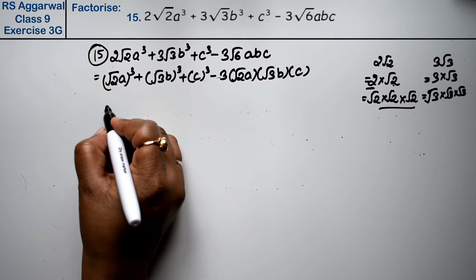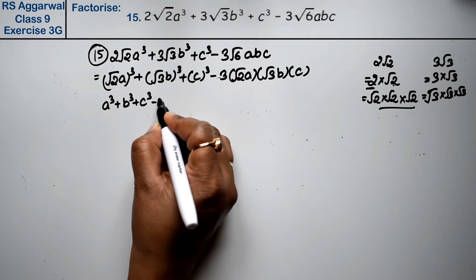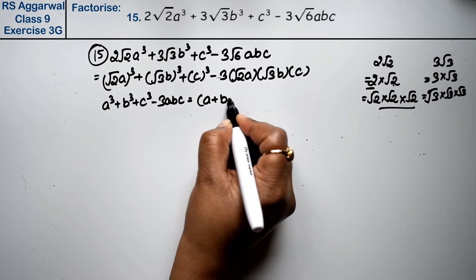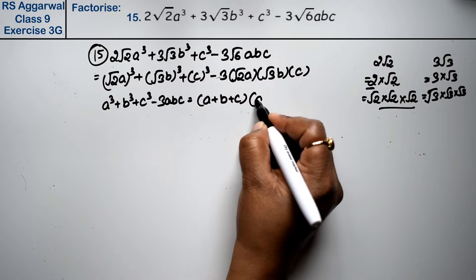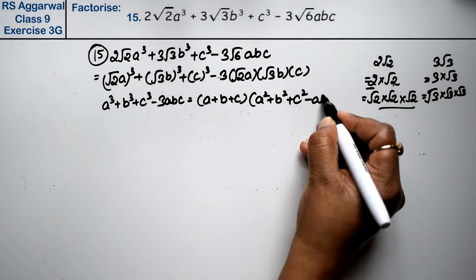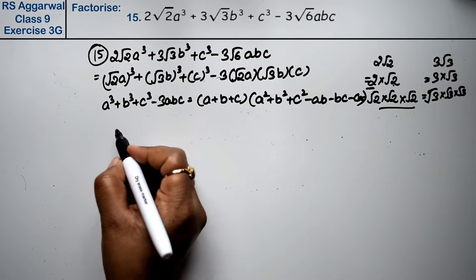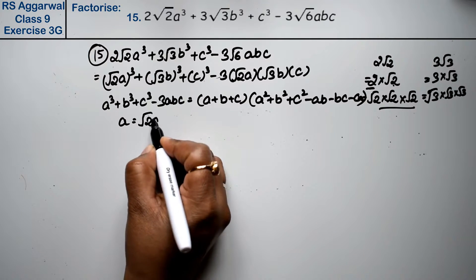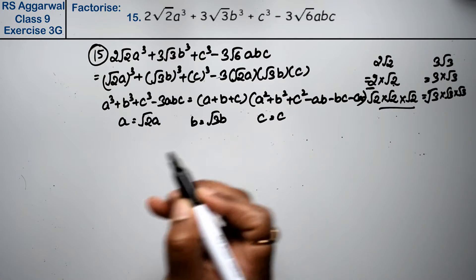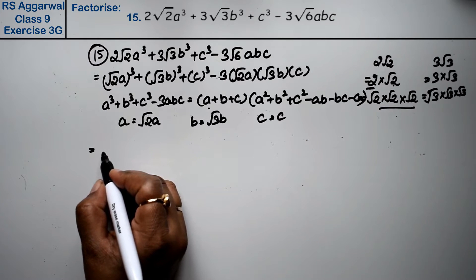Now, the formula for a³ + b³ + c³ - 3abc is (a + b + c)(a² + b² + c² - ab - bc - ca). Here, a = √2·a, b = √3·b, and c = c. So we fit these values into the formula.